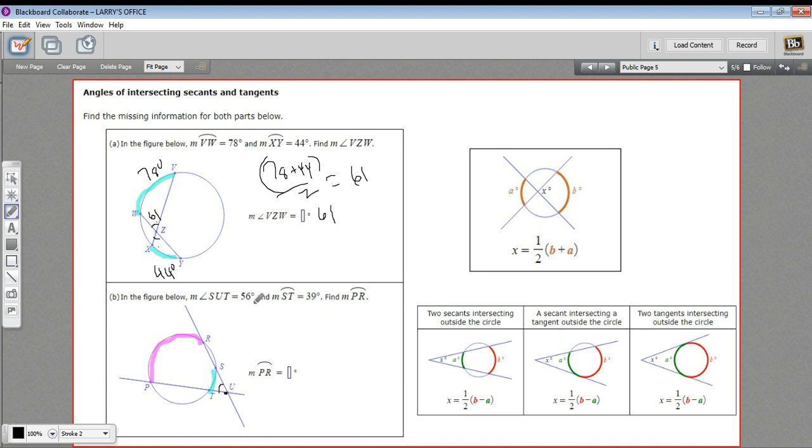So in this case, they're telling us that angle SUT is 56. So this angle is 56. And they're telling us the measure of arc ST, that's the small arc here, is 39 degrees. And what we want to find is the measure of PR. So that's the large arc. In our formula, this would be called B. So I'll call it B as well.